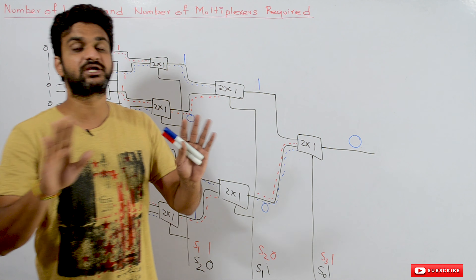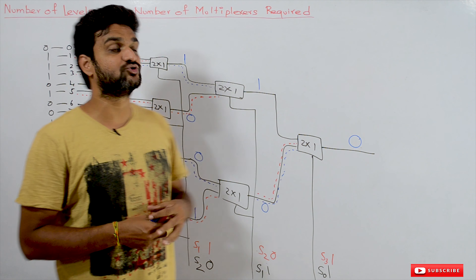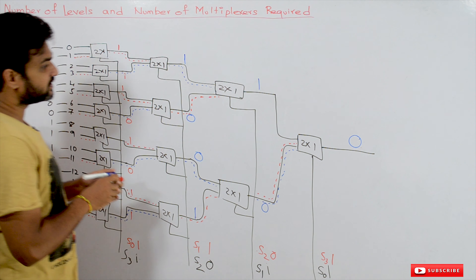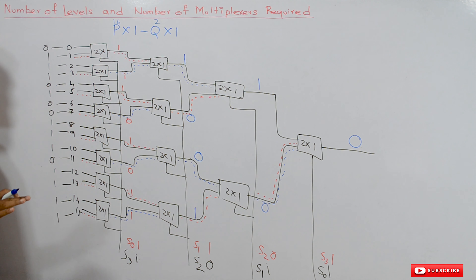Hi, welcome to Learning Monkey. I am Vikram. In this class we will try to understand the number of levels and number of multiplexers required to design a 16 by 1 multiplexer using 2 by 1 multiplexers. This discussion has already been made in our previous class — if you haven't watched that video, please watch it. So if you are asked to design a p by 1 multiplexer using a q by 1 multiplexer, those aspects have been discussed in our previous video.